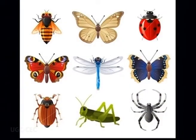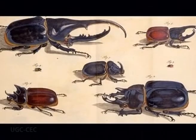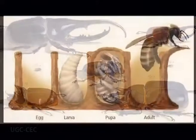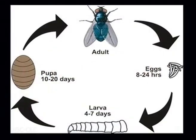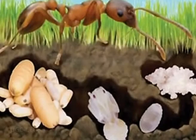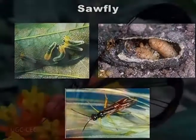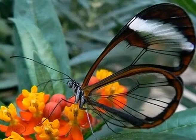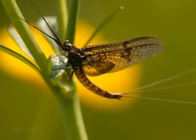Many insects have a life cycle of egg, larva, pupa, adult. Some of these are beetles, bees, wasps, ants, sawflies, butterflies, moths, and flies.